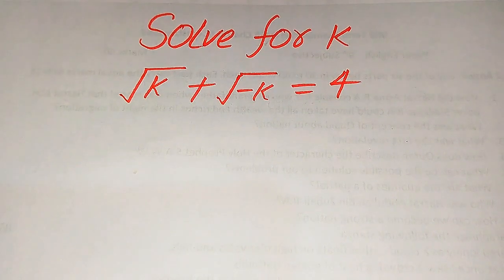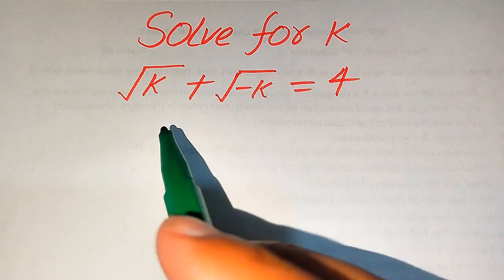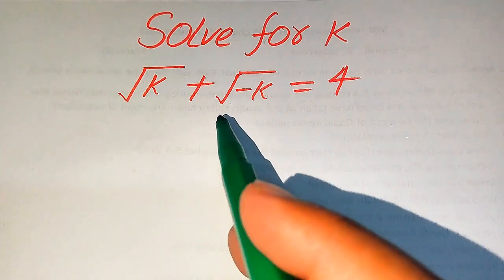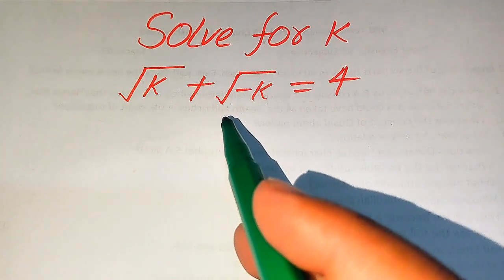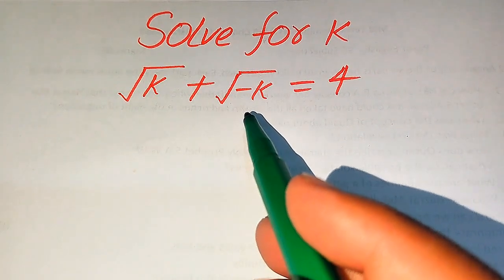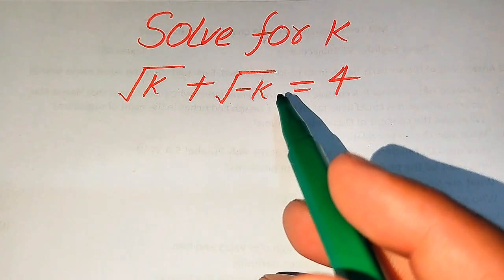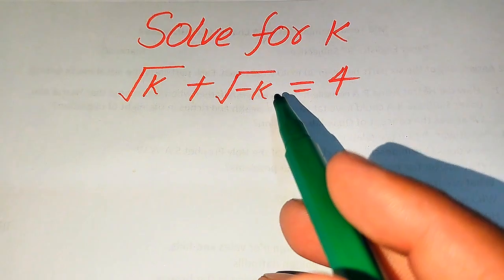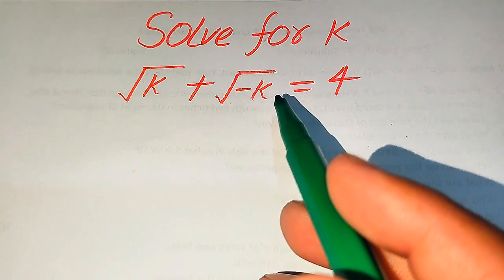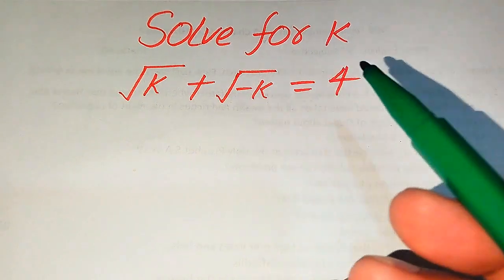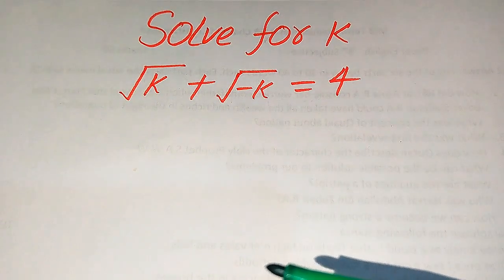Hello everyone. How to solve this problem for the values of k: if we have square root of k plus square root of minus k equals 4, and we solve this problem for all the values of k.